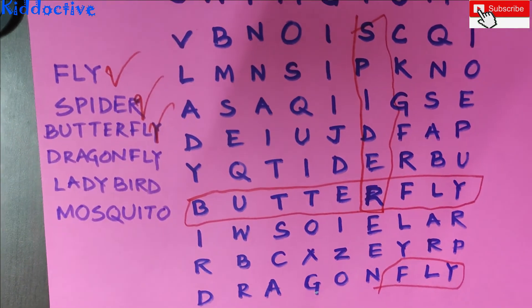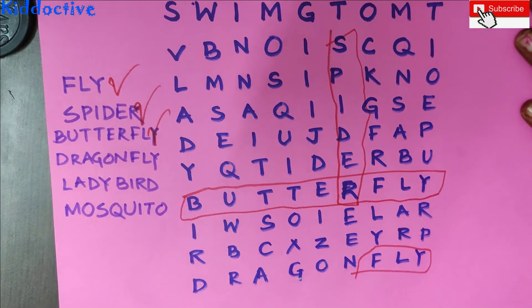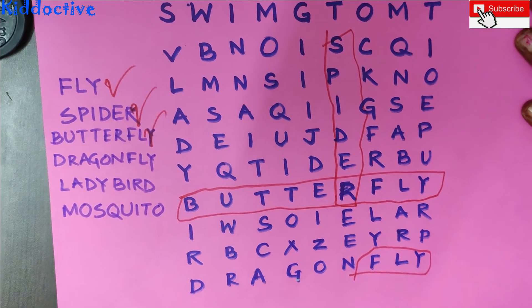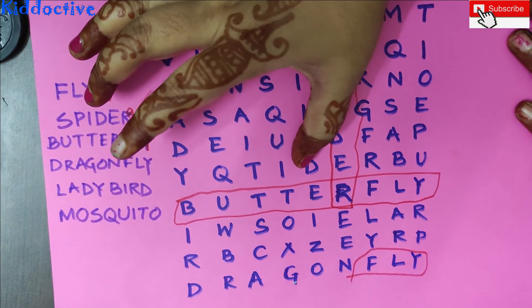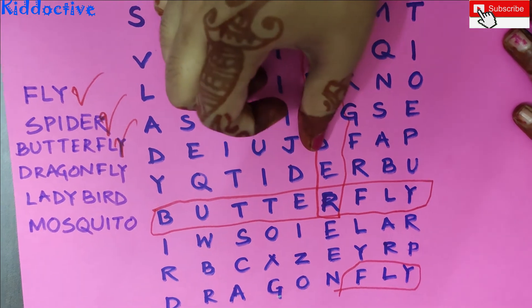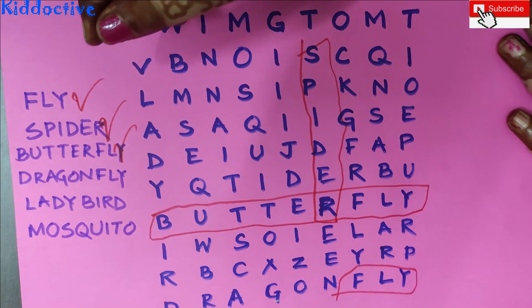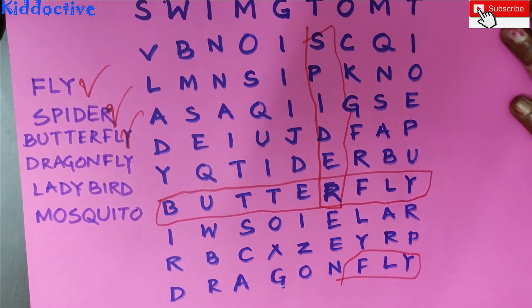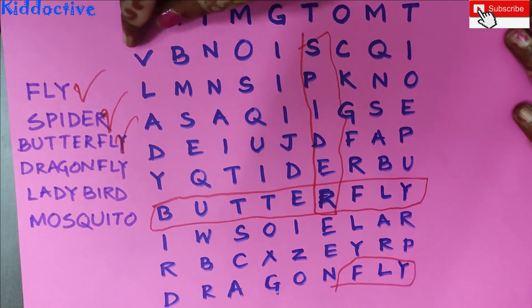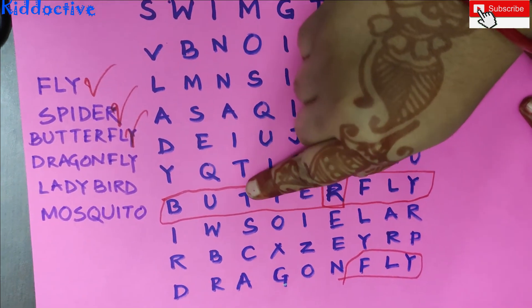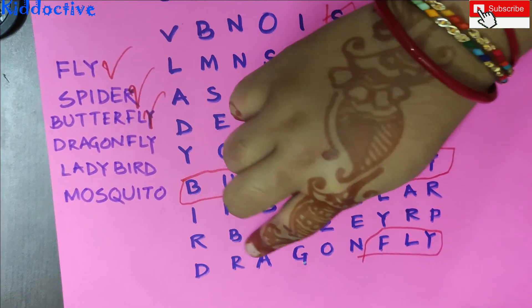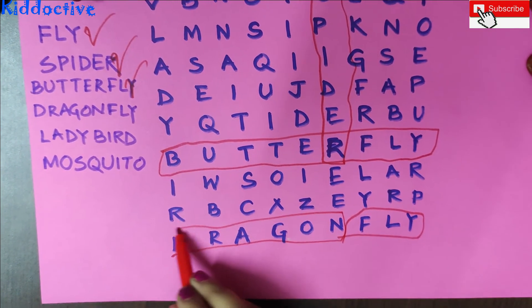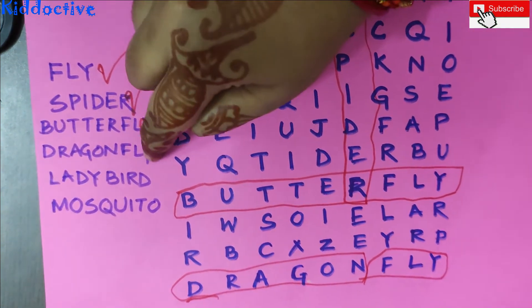What do we need to find? Dragonfly. Dragonfly — where is it? It starts from D. Look at D, where is it? D is here, but there is no R. D is here too, but there is no R. And where is it? Dragon, Dragon, Dragon — look at it. Dragonfly! Dragonfly, very good.